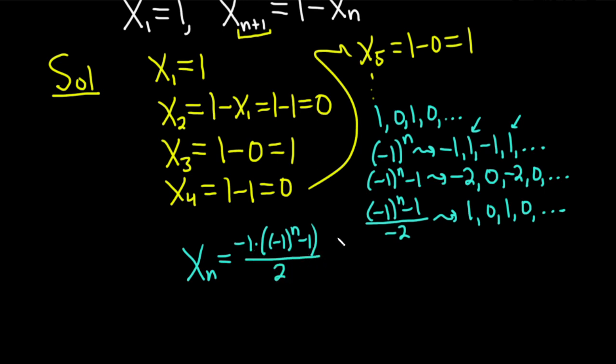When you distribute that negative 1 through, you end up with the following: x sub n is equal to 1 minus negative 1 to the n over 2. And this formula is valid for n greater than or equal to 1.